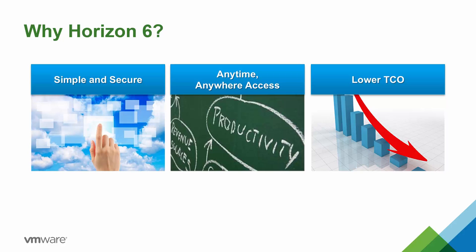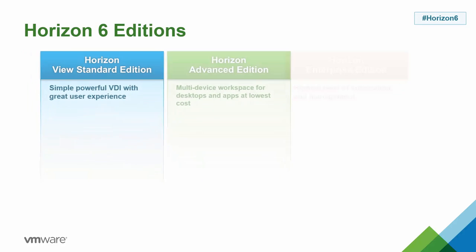To summarize, the benefits customers see from virtualizing their end-user computing environment using the Horizon 6 bundle include: streamlined management of desktops and applications with better security and control, protecting and delivering resources from the data center to end-users. It also provides easy access to all apps, desktops, and online services across different devices and geographical locations, and helps drive down operational and capital costs associated with managing end-user desktops and applications.